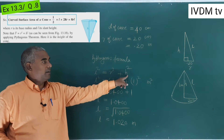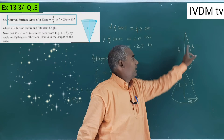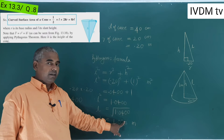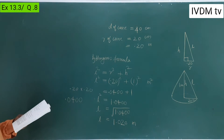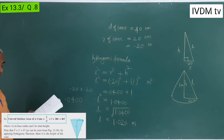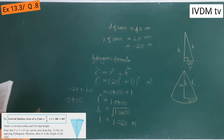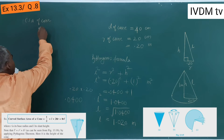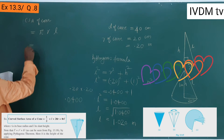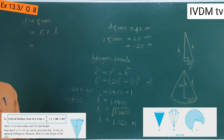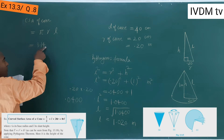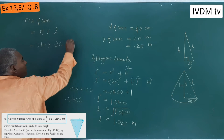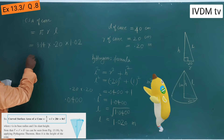Now let's find the curved surface area (CSA) of one cone, then multiply by 50 to get the total CSA, and then multiply by the rate to get the total cost of painting. The formula for curved surface area is: CSA = π r l. We are keeping everything in meters since the rate is in meter square. π = 3.14, r = 0.20 m, l = 1.02 m.